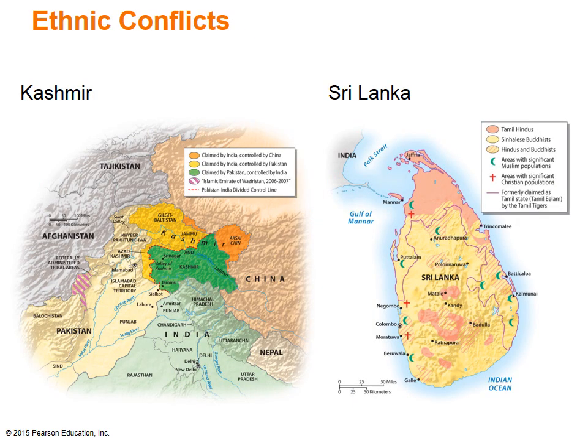Violent ethnic conflicts persist in many parts of South Asia, specifically in Kashmir and Sri Lanka. Unrest in Kashmir inflames the continually hostile relationship between the two nuclear powers of India and Pakistan, who have been at odds from the very beginning, mainly due to religious differences. Kashmir is predominantly Muslim, while Jammu to the south is predominantly Hindu. Today, many Kashmiris wish to join Pakistan, while many others argue for an independent state.